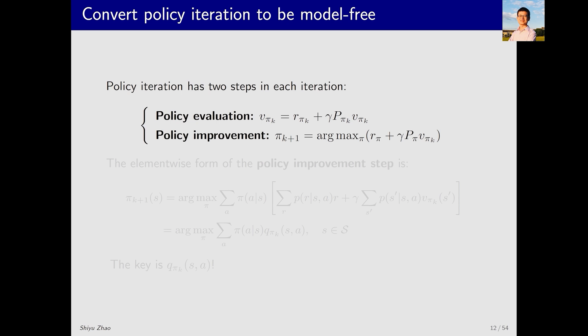Now, let's explore how the policy iteration algorithm can be transformed into a model-free one. Policy iteration has two steps in each iteration: policy evaluation and policy improvement. What does policy evaluation do? For a given policy pi k, we calculate the state value v pi k by solving the Bellman equation. Once v pi k is known, we can improve the policy.